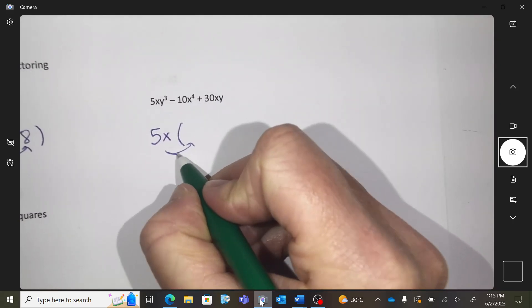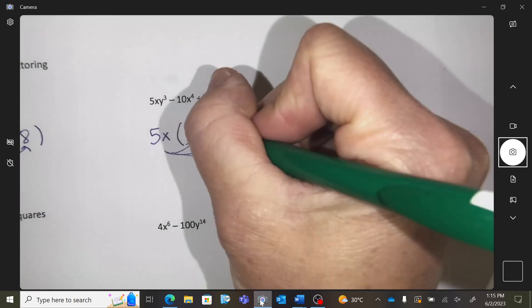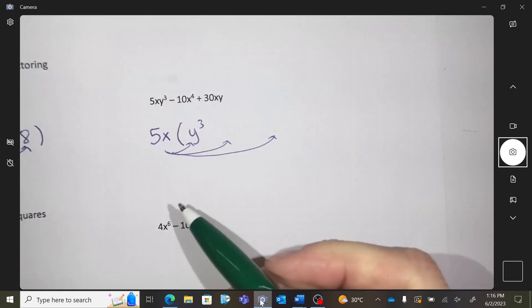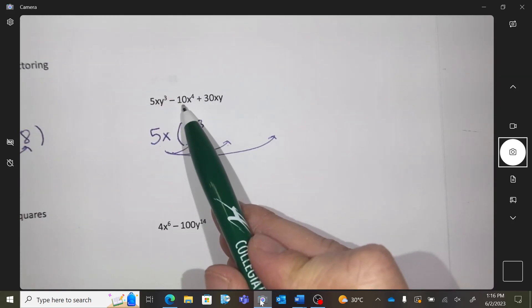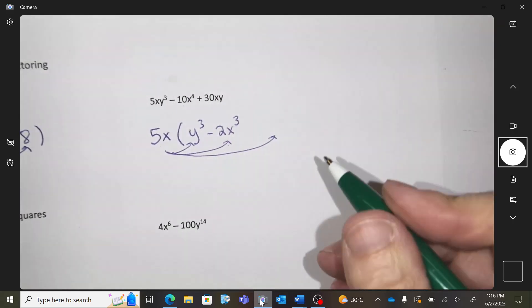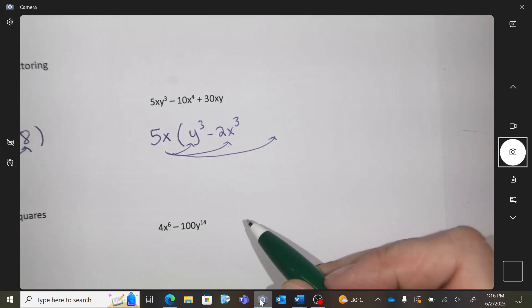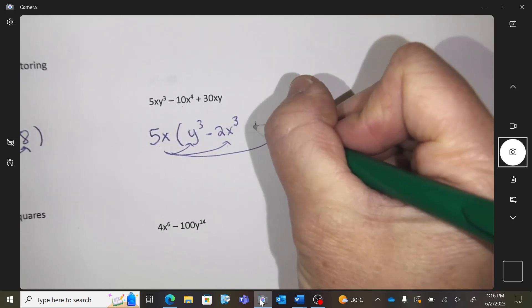So I'm done. Now there's three terms, so I'm going to have three pieces inside the brackets. So 5x times what to make that? Y cubed. 5x times something here would make that. And finish it off. 5x times the last thing.